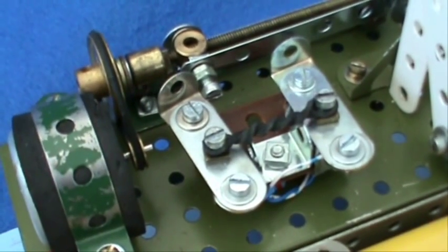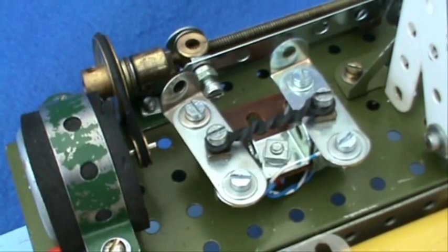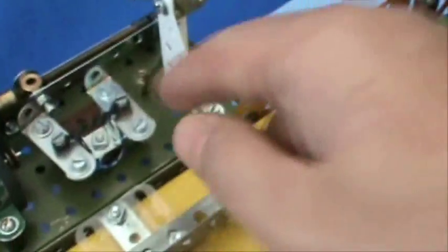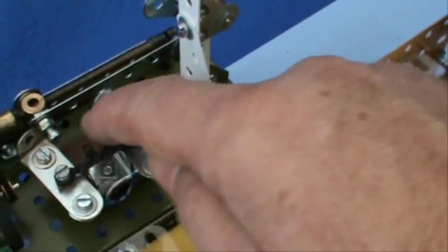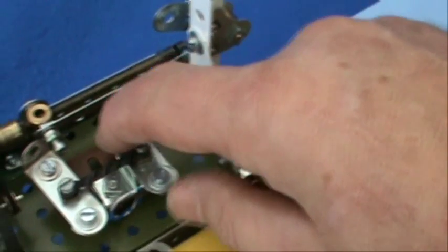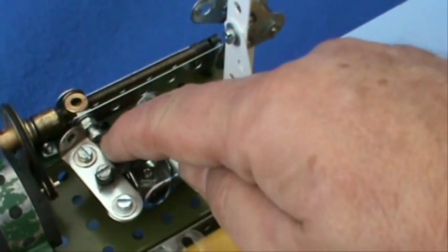I've combined two switches in one with this Meccano device to operate the signals. At the moment the signal is down. If the signal was up, this linkage would move across and lift this switch arm and connect it to earth or chassis through this bolt head here.